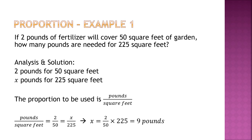If 2 pounds of fertilizer will cover 50 square feet of garden, how many pounds are needed for 225 square feet? The proportion to use is pounds over square feet: 2 over 50 equals x over 225. Then you cross-multiply to find the unknown. Alternatively, the shorter method is: put what you want to find on top, divide by the same unit, and multiply by the opposite. So 225 divided by 50, times 2.